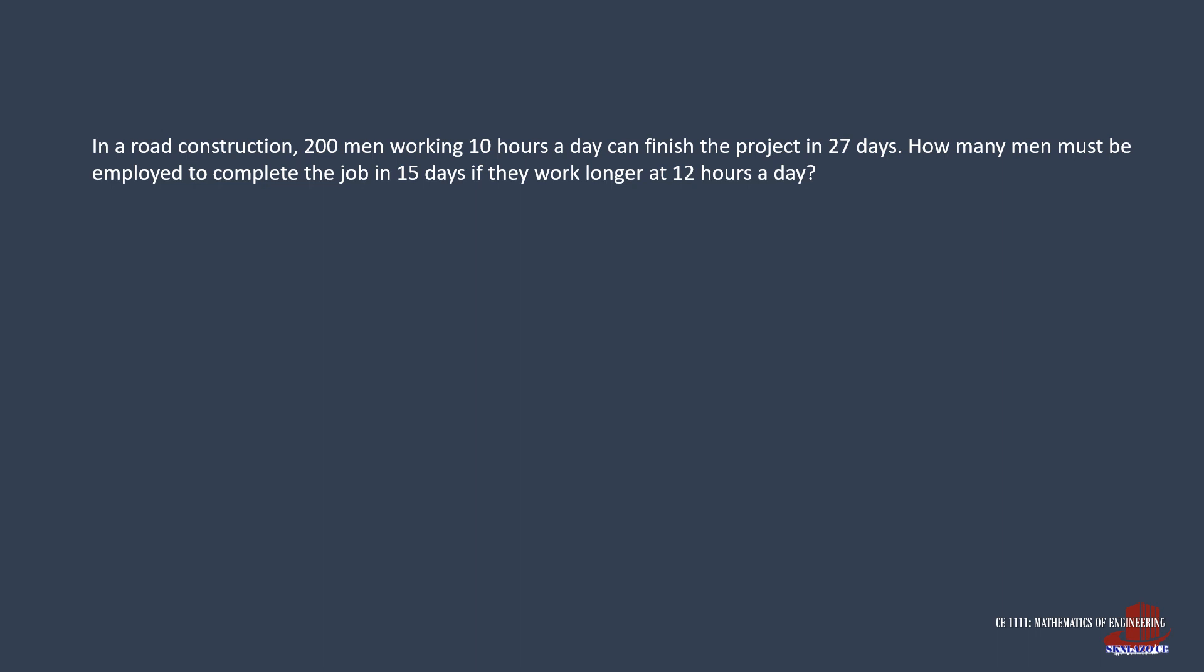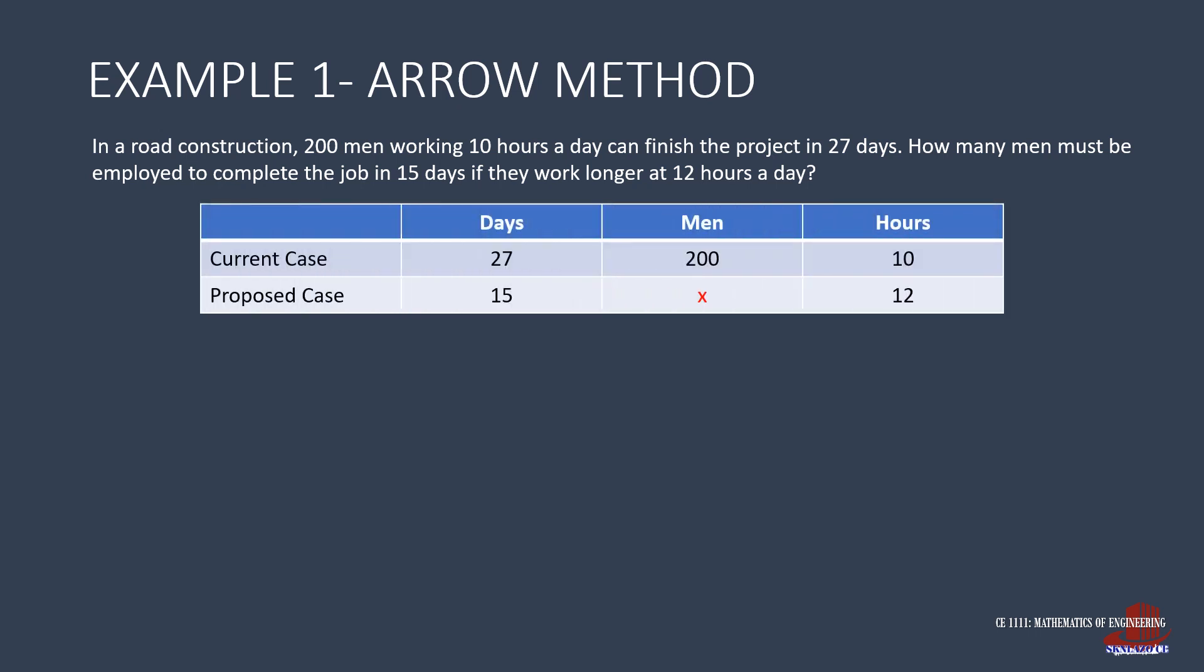Another way to solve compound proportion is using the arrow method. For this solution, it will be easier to determine the relationships when the quantity with an unknown is placed at the center. The next is to place the arrows. Focusing on the number of men, it is just right to identify that the more men working, there will be lesser days to finish the project. So as the number of men goes up, the number of days goes down. This is an inverse proportion.